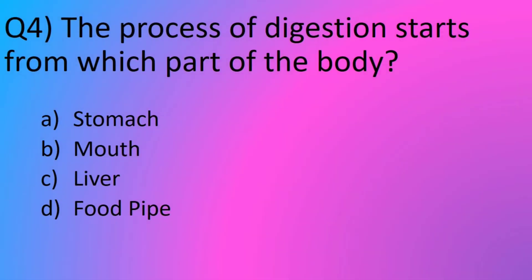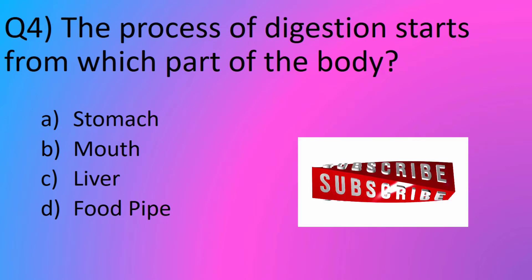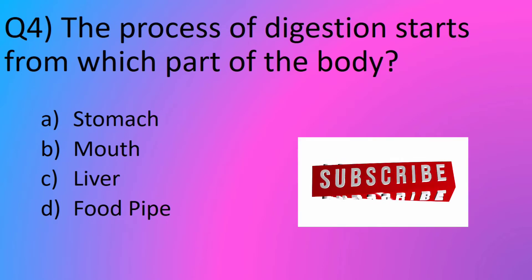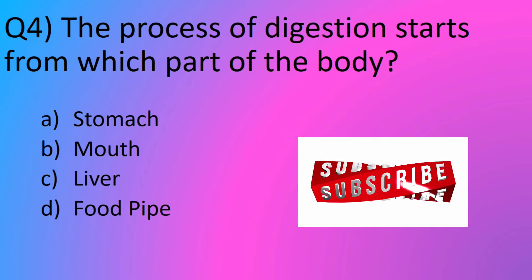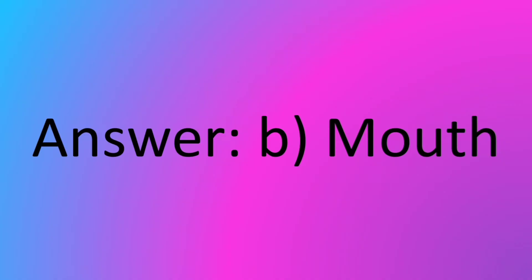Question No. 4: The process of digestion starts from which part of the body? Option A: Stomach. Option B: Mouth. Option C: Lever. Option D: Food Pipe. The answer is Option B: Mouth.